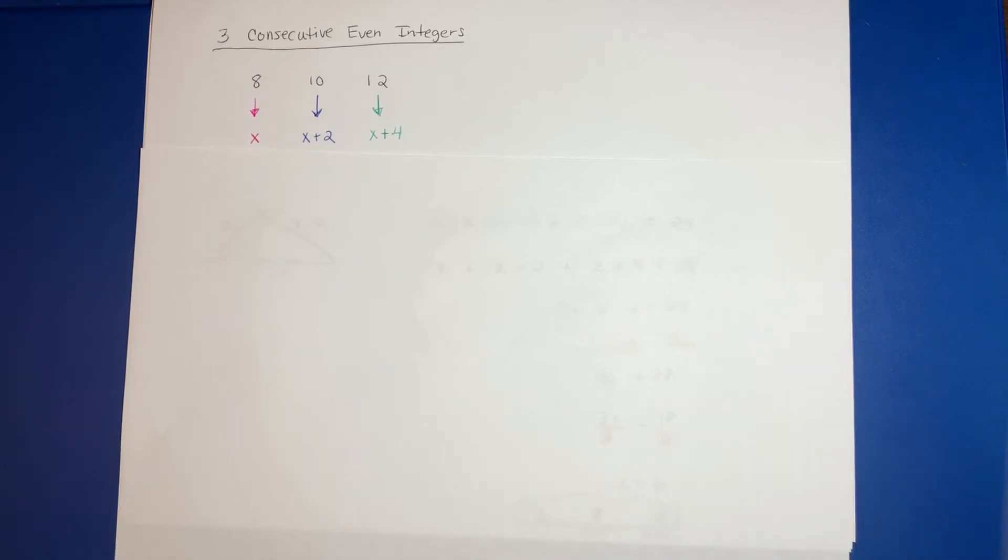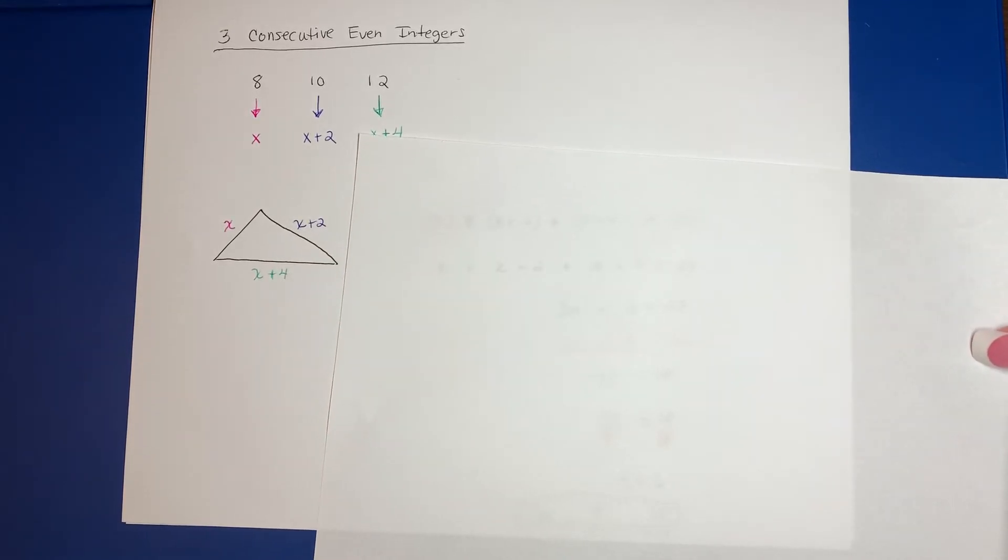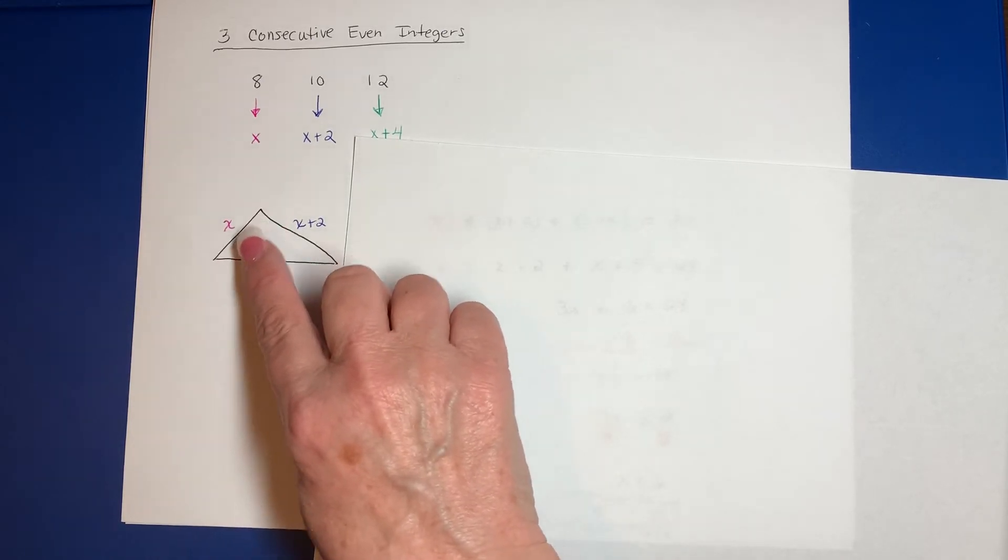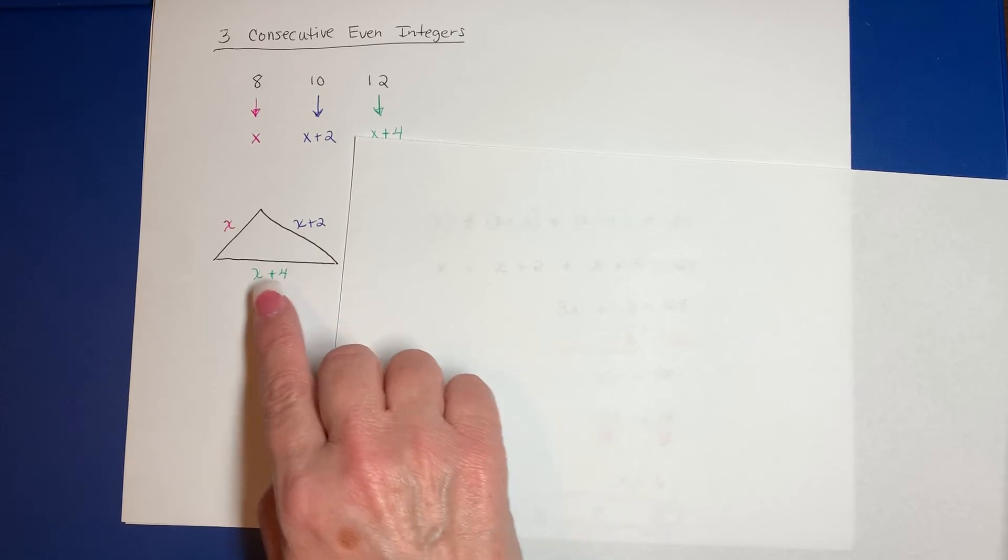Your problem had to do with a triangle. It said that the three sides of your triangle were three consecutive even integers, and your perimeter was 24. So I just said one of the sides is X, another side is X plus 2, and the third side is X plus 4.